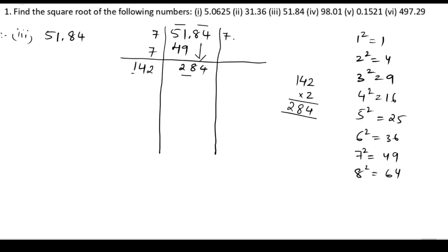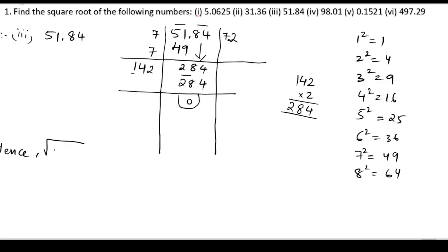So 2 into 2. We put the decimal point here, giving 284. The remainder is 0. Hence, the square root of 51.84 is 7.2.